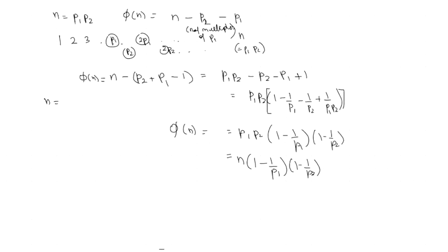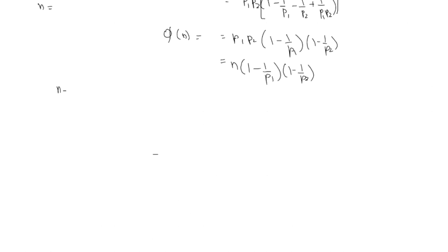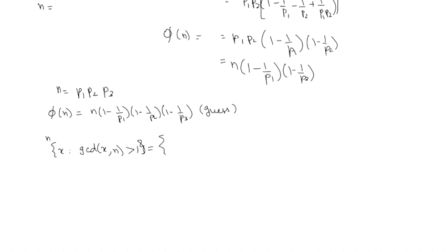Now the next complicated case: n is of the form p1 times p2 times p3. Following the pattern, we expect phi of n to be n times (1 minus 1/p1) times (1 minus 1/p2) times (1 minus 1/p3). Numbers that have GCD > 1 will include multiples of p1, p2, p3, and also numbers divisible by products like p1·p2, p2·p3, p1·p3.